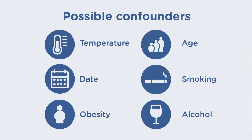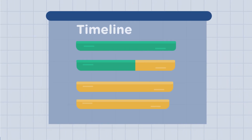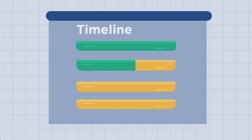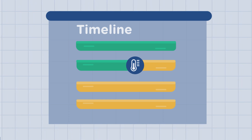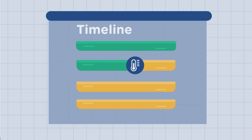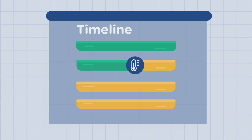A nice rule of thumb to list possible confounders is to think of possible risk factors for the outcome, such as the ones just mentioned. When listing possible confounders, it is important to take the natural course of time into account — a possible confounder is present earlier in time than the exposure. For example, the temperature of the day. Your drawing of the relationships may benefit from ordering the variables along a timeline.